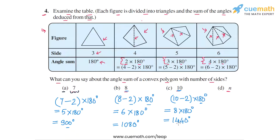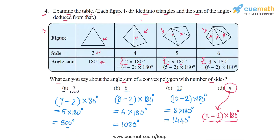So 1440 degrees is the angle sum for any convex polygon with 10 sides. Finally, in general, for a polygon with n sides, the number of triangular parts is (n − 2), and the angle sum in each part is 180 degrees. So the total angle sum is (n − 2) × 180 degrees. This general expression allows us to calculate the angle sum for any n-sided convex polygon.